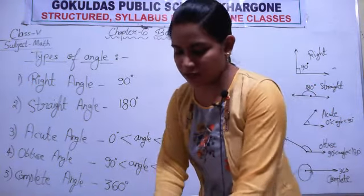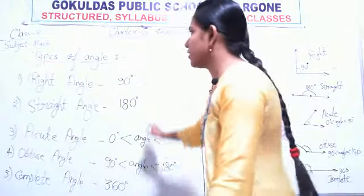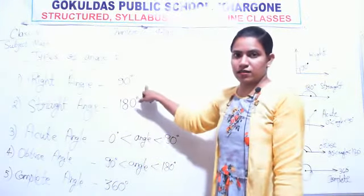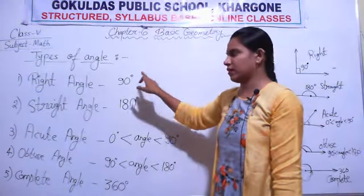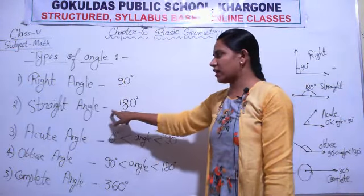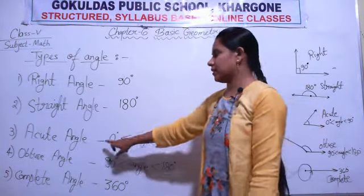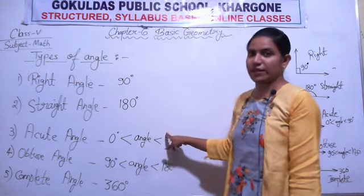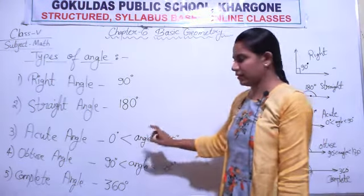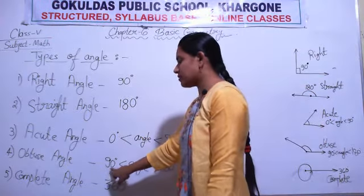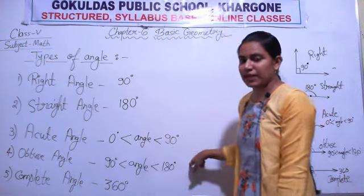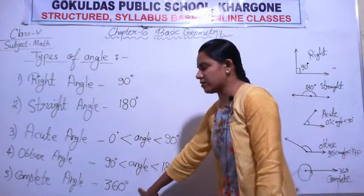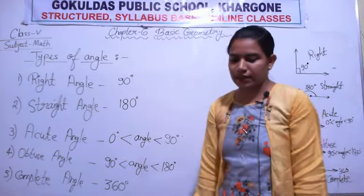Let us recall all these types once more: right angle measures 90 degrees; straight angle measures 180 degrees; acute angle measure is greater than 0 but less than 90 degrees; obtuse angle measure is greater than 90 but less than 180 degrees; and complete angle measure is 360 degrees.